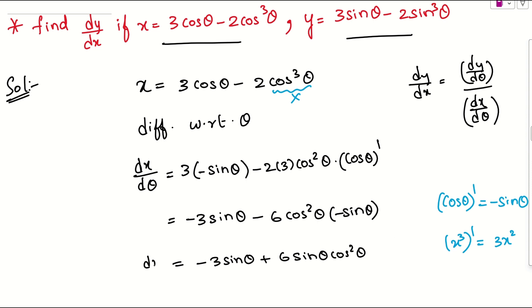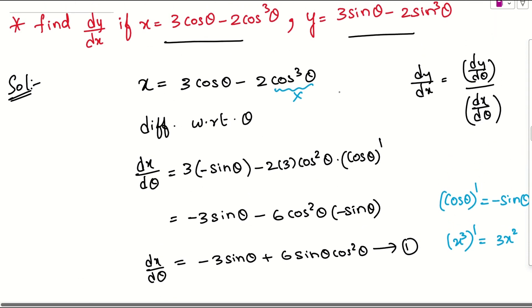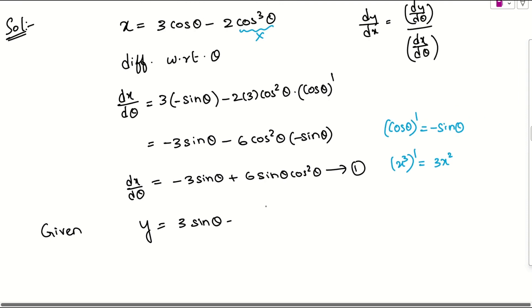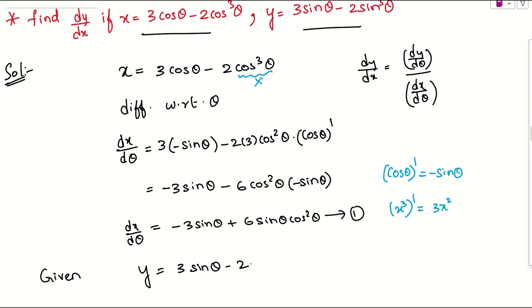We write dx/dθ as equation number 1. Now, y is given as 3sinθ minus 2sin³θ. Let me zoom out so you can see — this is 3sinθ minus 2sin³θ.